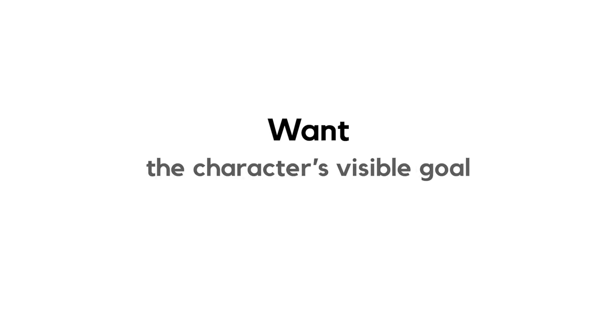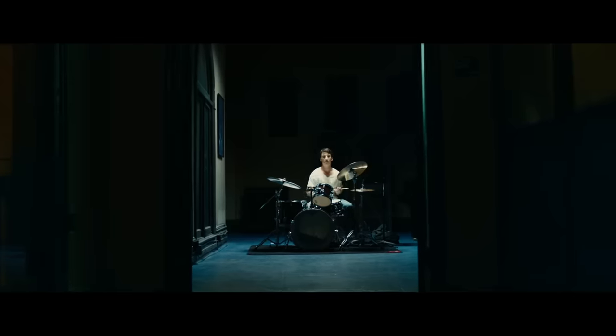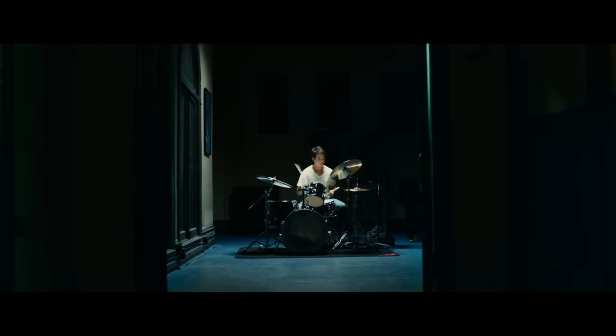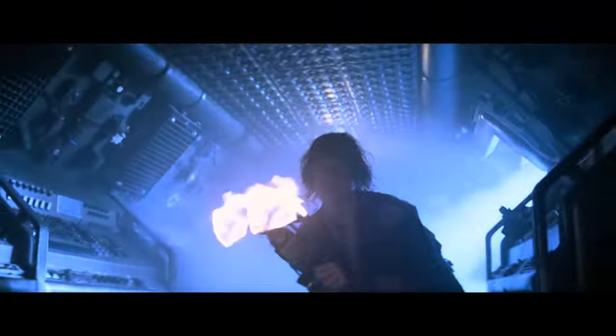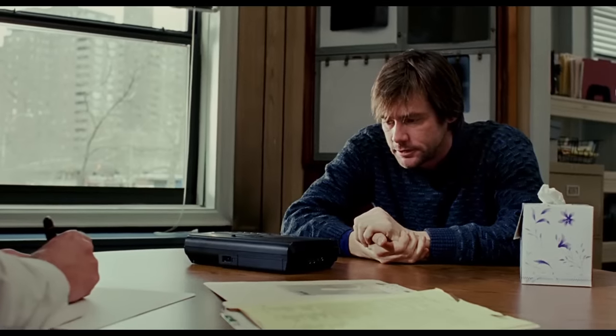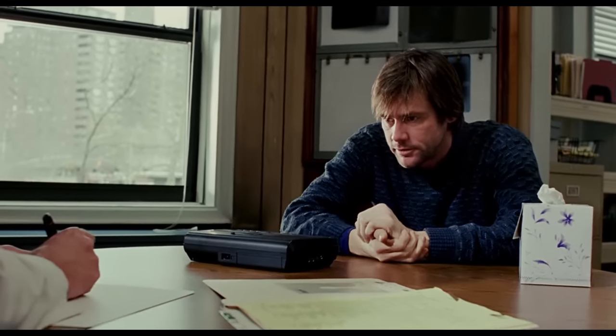Let's talk about a character's want. A want is the character's visible goal, and it's what makes up the events of the plot. The want is external, and the audience is usually aware of what a character wants. Maybe the character wants to become a great musician. Maybe she wants to kill the alien on her ship. Maybe he wants to figure out whether or not someone is guilty. Or maybe he wants to stop feeling the pain of a past relationship.